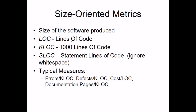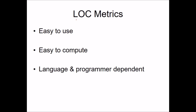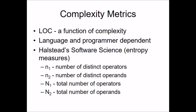There are various size-oriented metrics. For example, size of software produced can be measured in lines of code (LOC) or kilo lines of code (KLOC). If we ignore white spaces, we use statement lines of code. Typical measures include: errors per KLOC, defects per KLOC, cost per line of code, and documentation pages per KLOC. These LOC metrics are easy to use and easy to compute but are language and programmer dependent.